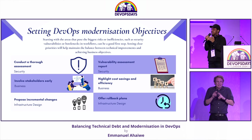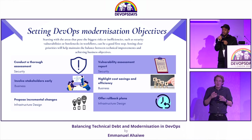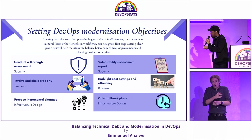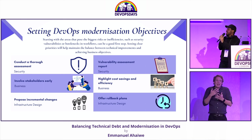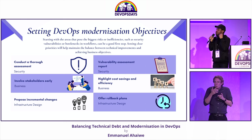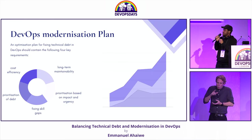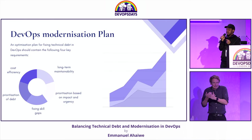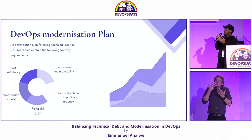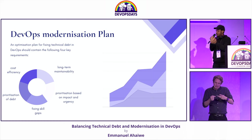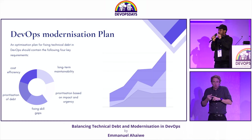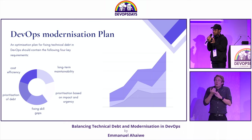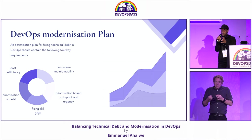You conduct a thorough security assessment, a vulnerability assessment, involve stakeholders early, highlight cost savings, and show why this modernization is important to the organization. Show that you are going to prioritize based on impact and urgency. It's important to note these key points in creating a modernization strategy.